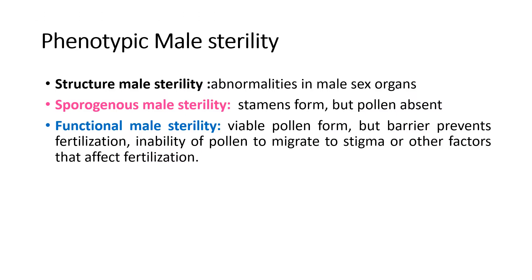Phenotypic male sterility includes: structural male sterility, that is abnormality in the male sex organ; sporogenous male sterility, where stamens form but pollen is absent; and functional male sterility, where viable pollen forms but a barrier prevents fertilization, or inability of pollen to migrate to the stigma or other factors that affect fertilization.